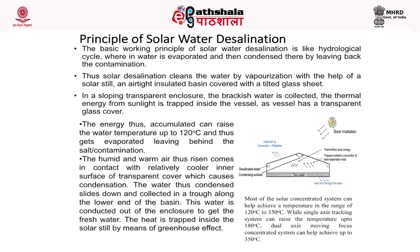Most concentrated solar systems achieve temperatures in the range of 120°C to 350°C. Single-axis tracking systems can raise temperatures up to 180°C, while dual-axis moving focus concentrated systems can achieve up to 350°C.